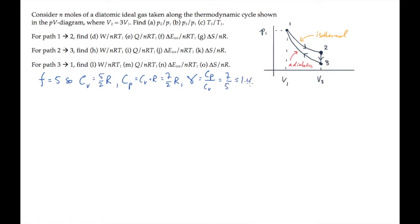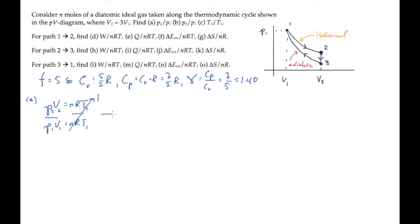Now we can solve Part A, which asks for the ratio P2 over P1. We'll do this by writing the ideal gas law twice, once for state 2 and once for state 1, and taking the ratio. Notice that the right-hand side entirely cancels because the process is isothermal, so T2 equals T1. The ratio of the pressures equals the inverse ratio of the volumes, which is 1 third.